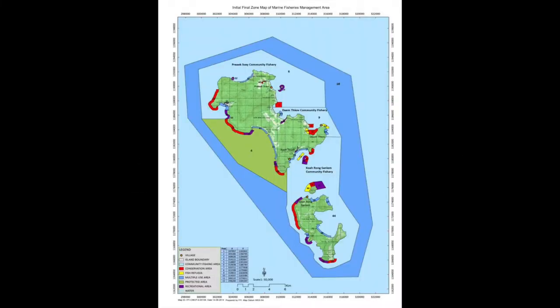The place that we are using SMART is in the Coirong Archipelago Marine Fisheries Management Area. The boundary of the Marine Fisheries Management Area is this dark blue line that you can see, and within the Marine Fisheries Management Area there are three community fisheries.